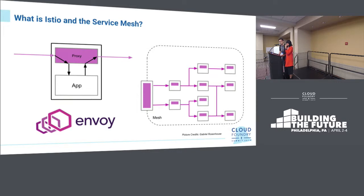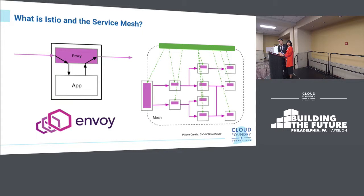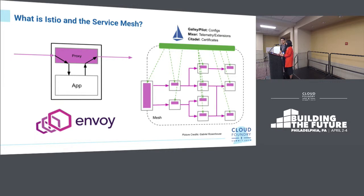All of these sidecars intercept traffic for their corresponding apps and talk to each other. The service mesh itself can come with a gateway — typically called the ingress gateway — that manages all inbound and outbound traffic to the service mesh itself; essentially a sidecar for the service mesh. On top of that, you have a control plane managing the data plane of all sidecars, distributing policies, collecting telemetry, and managing certificates. That's essentially what Istio is: a combination of a data plane and a control plane layering on top of all your applications. Istio components include the Envoy sidecar, Galley and Pilot for config management, Mixer for telemetry and extensions, and Citadel for certificate management.